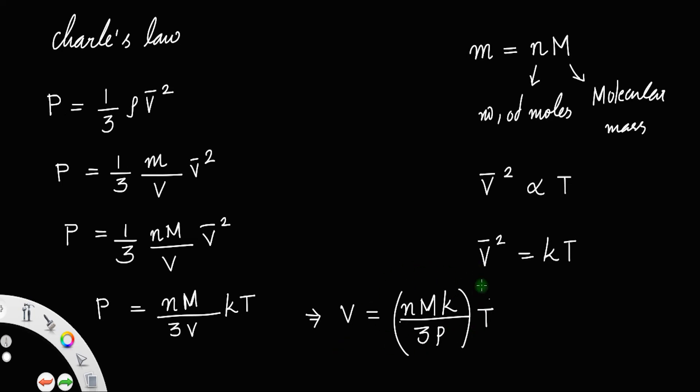Now, if you look at the equation here, we have taken number of moles constant, pressure also is constant. This molecular mass does not change for a gas molecule, it is constant. K is already a constant. So at constant pressure and number of moles, we have this whole term constant.